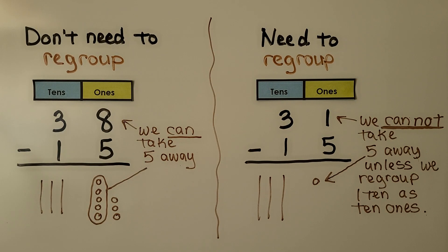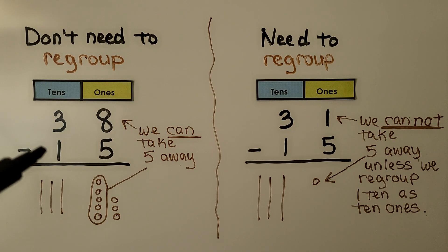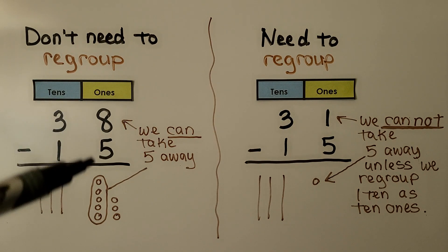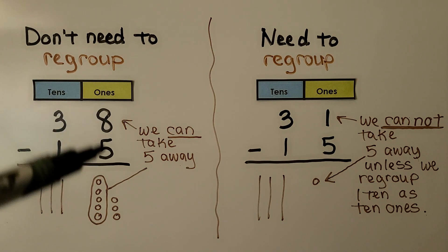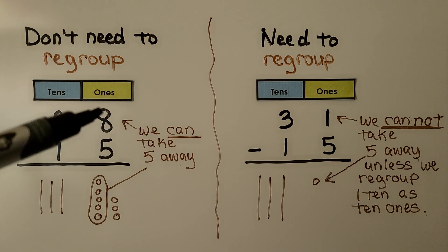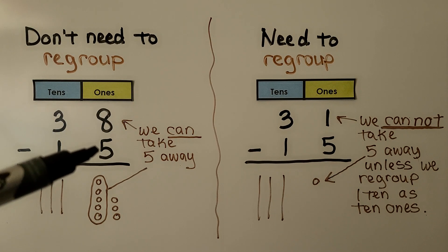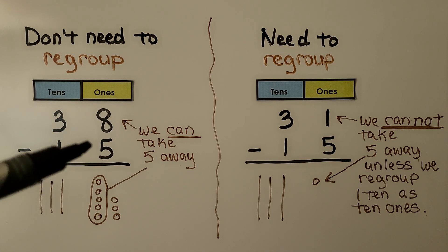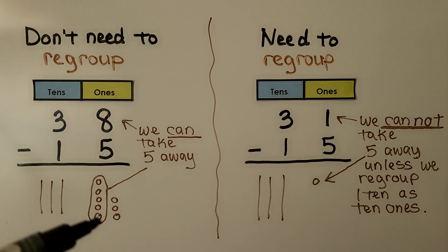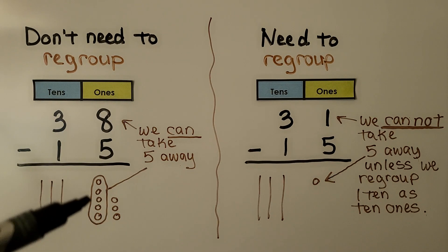Knowing when we need to regroup and when we don't need to regroup is really important. Here we don't need to regroup — we have 38 minus 15. When we look at the ones place, we have eight and we want to take away five. We can do this. There are eight ones; we can take five away.